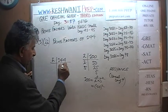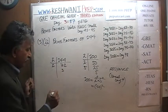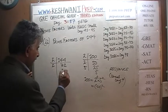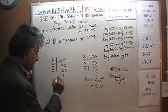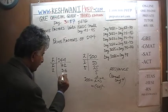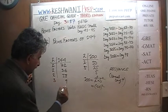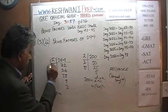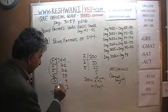Dividing 144 by 2 repeatedly: 144 ÷ 2 = 72, ÷ 2 = 36, ÷ 2 = 18, ÷ 2 = 9. We can no longer divide by 2, and we're left with 9, which is 3 times 3. So 144 is 2 raised to the 4th times 3 squared.